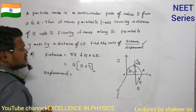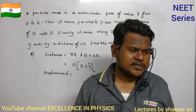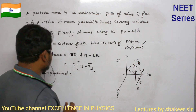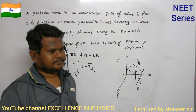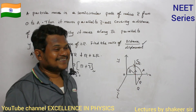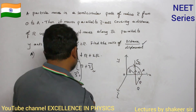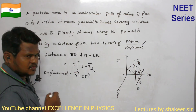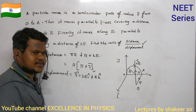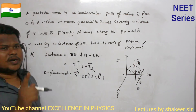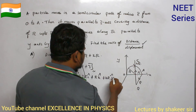Displacement is a vector quantity. Writing the displacement vector: along the x-axis the particle moved a diameter of 2r, so the x-component is 2r·î. Along the z-axis it moved r, so the z-component is r·k̂. Along the y-axis it moved 2r, so the y-component is 2r·ĵ. The displacement vector is s = 2r·î + r·k̂ + 2r·ĵ.